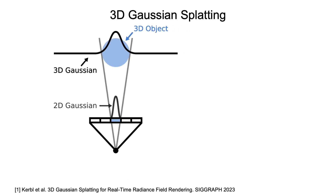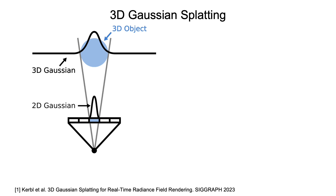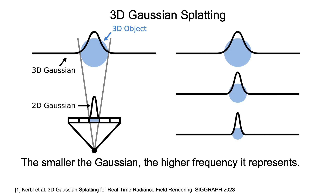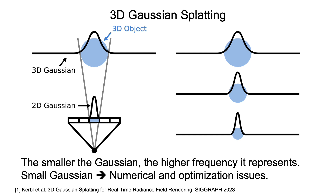The Gaussians are optimized with gradient descent, and they could be of any size. To represent high-frequency details in the scene, the 3D Gaussians will be small. However, when the Gaussians become small, it might lead to optimization issues when they fall between pixels, or result in the creation of a large number of Gaussians, which in turn can cause out-of-memory issues.